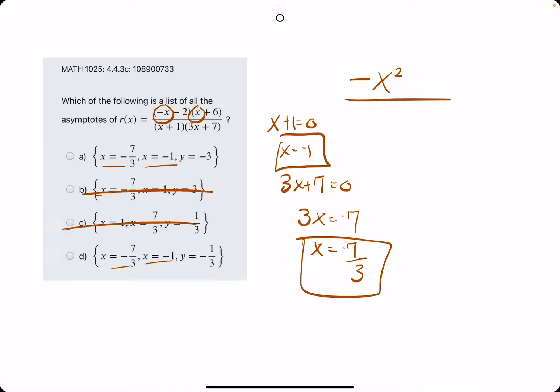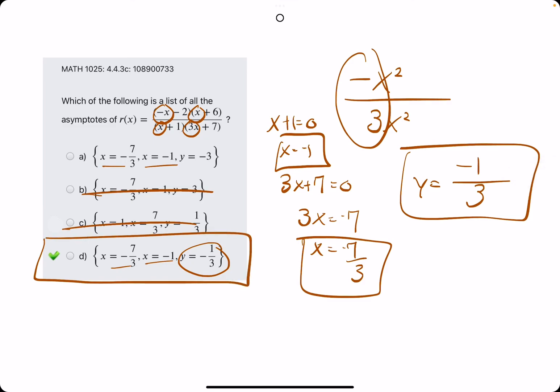Negative x squared. On the bottom, we have x times three x. So that's three x squared. Taking the coefficients, we have negative one over three.